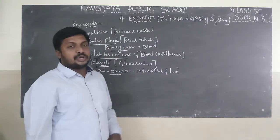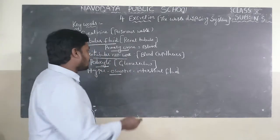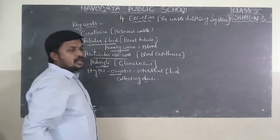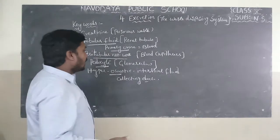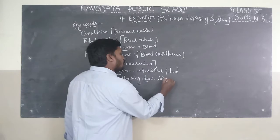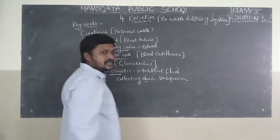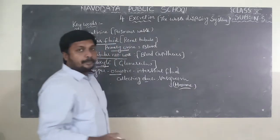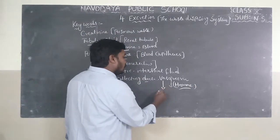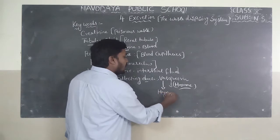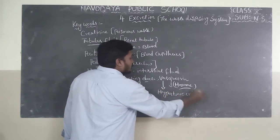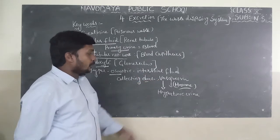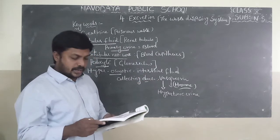Next keyword is hyperosmotic intestinal fluids. After completion of reabsorption in the renal tubule, the last part of the renal tubule is the collecting duct. Here, urine gets concentrated in the collecting duct with the help of a hormone known as vasopressin. Vasopressin is the hormone released from the pituitary gland and plays an important role in the production of hypertonic, or concentrated, urine.